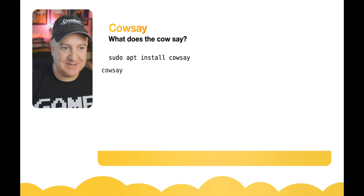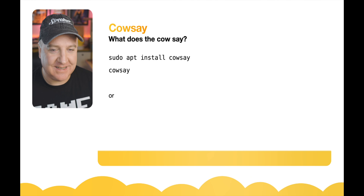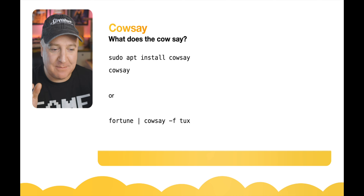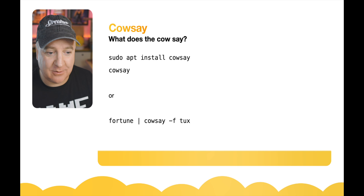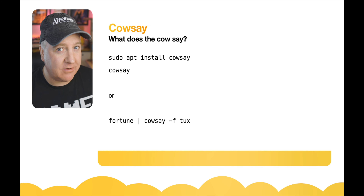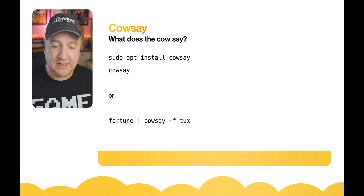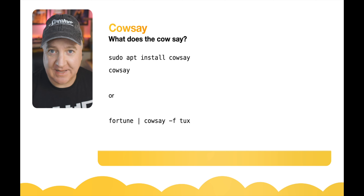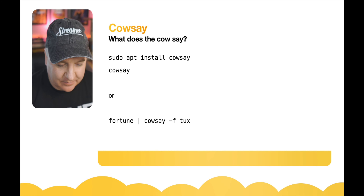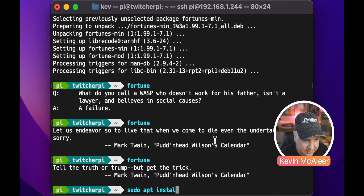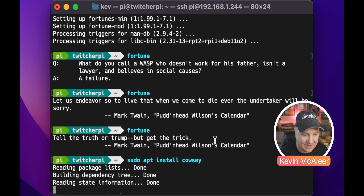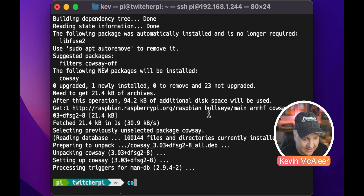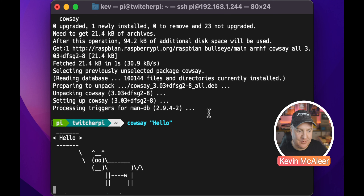Cowsay is one you might have seen before. It simply has a little ASCII art picture of a cow and it will say a message that we pass to it. We can pipe fortune into cowsay, and there are loads of different characters — like Tux the Linux penguin, or the cow itself. Let's install it: sudo apt install cowsay. At its simplest, we can just say cowsay 'hello' and get the little cow saying hello.